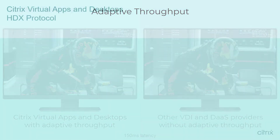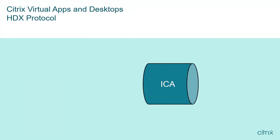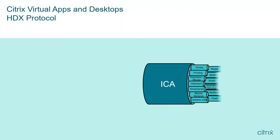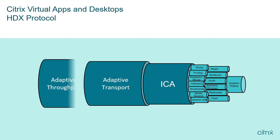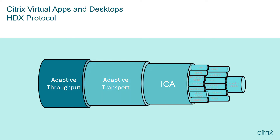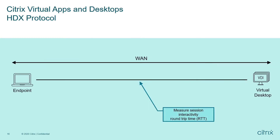Citrix Virtual Apps and Desktops utilizes HDX, which incorporates multiple technologies ranging from optimized virtual channels within the ICA protocol to adaptive transport and adaptive throughput algorithms. Adaptive throughput utilizes dynamic or adaptive buffers to better control how much data is put onto the wire, and these buffers change as the network conditions change.